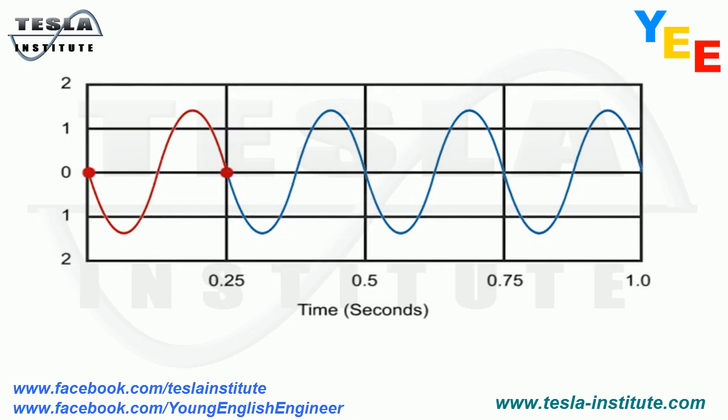In this example, the time it takes to complete one cycle is .25 seconds, so this waveform has a period of .25 seconds. The unit of measurement of wave frequency is called Hertz.